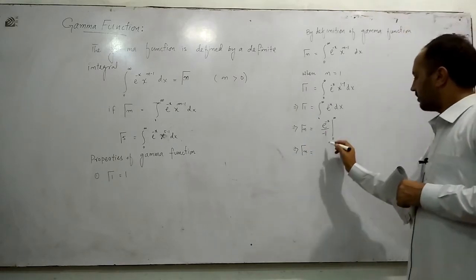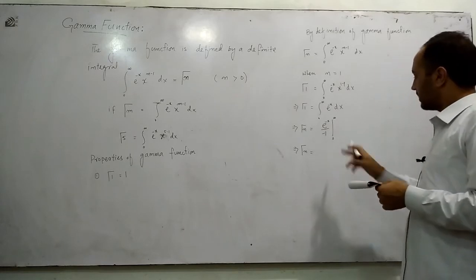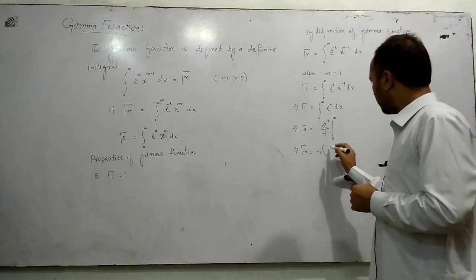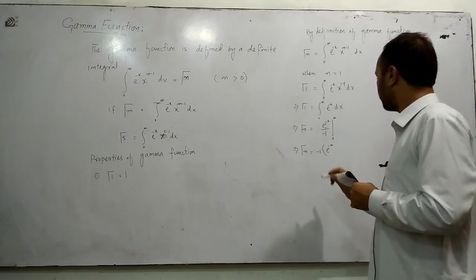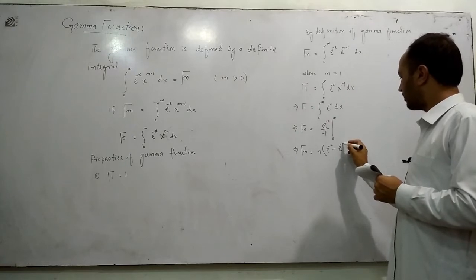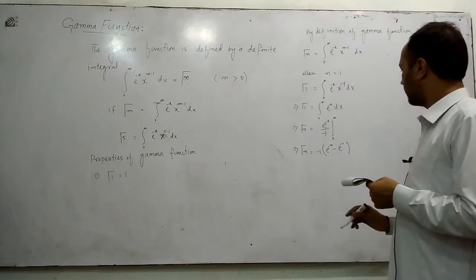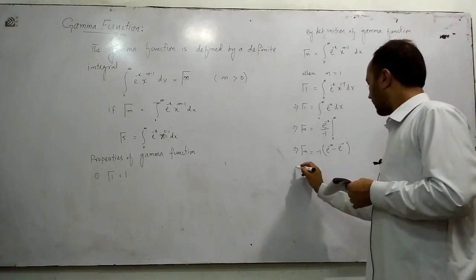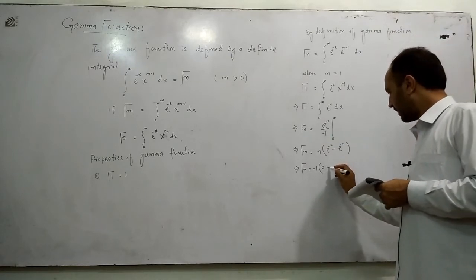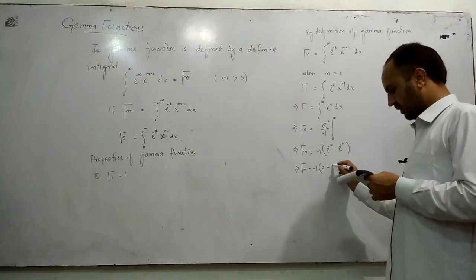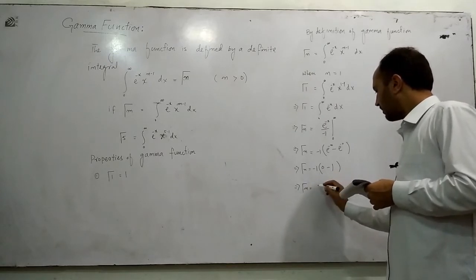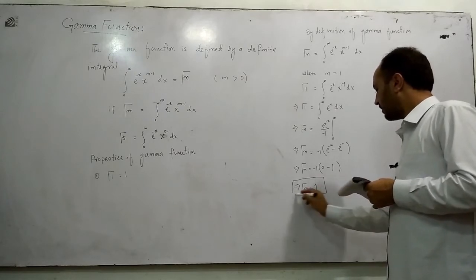Substituting the limits, we bring minus 1 into the numerator, giving minus 1 times the quantity e to the power minus infinity minus e to the power minus 0. Now e to the power minus infinity equals 0 and e to the power minus 0 equals 1. So gamma(1) equals minus 1 times (0 minus 1), which equals minus 1 times minus 1, giving plus 1. Therefore gamma(1) equals 1 is proved.